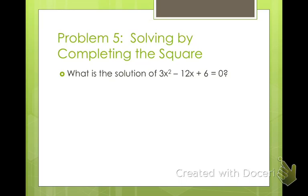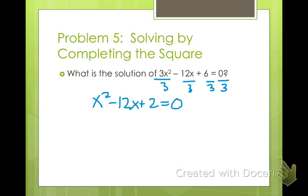Now we're going to solve by completing the square. In order to solve by completing the square, your x squared coefficient must be 1. If it's not 1, you have to divide everything by whatever your coefficient is. So I have x squared minus 12x plus 2 equals 0. This is not right now a perfect square trinomial. So I'm going to subtract 2 from both sides. And over here: x squared minus 12x plus some value I don't know yet equals negative 2.